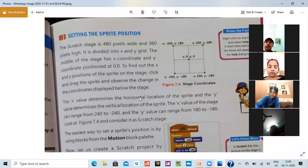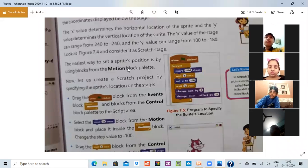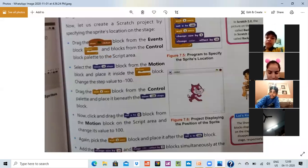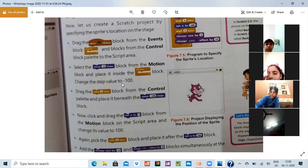So let's come to the easiest way to set the sprite's position by using blocks from the motion block palette. If you want your sprite to move, you can use motion block palette. Now drag the block from the event block and block from the control block palette to the script area. Select the block from the motion block and place it inside the block. Change the step value to minus 100.